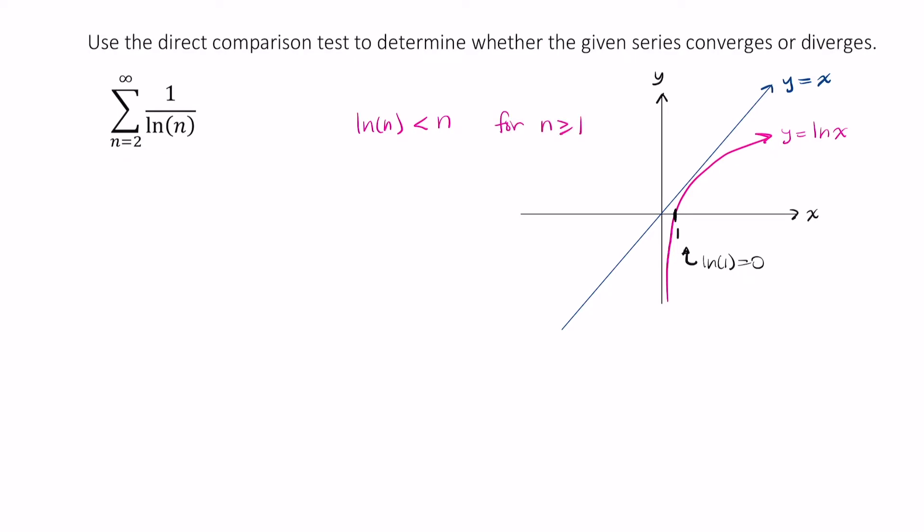So clearly then, since the natural log of n is less than n, it follows that the reciprocal, 1 over ln of n, is larger than 1 over n.